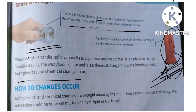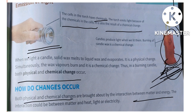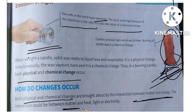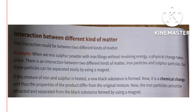How do changes occur? Both physical and chemical changes are brought about by the interaction between matter and energy. The interaction could be between matter and heat, light, or electricity. The interaction could also be between two different kinds of matter.